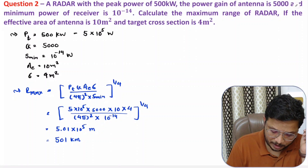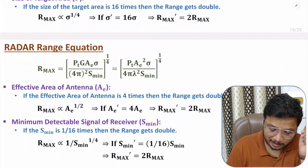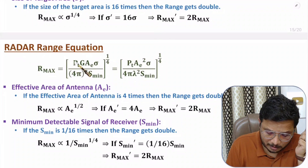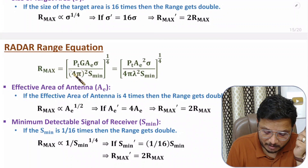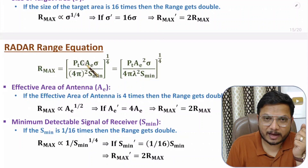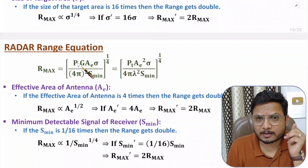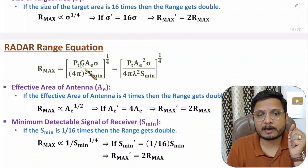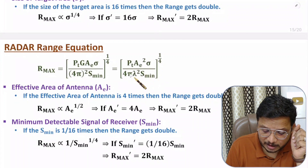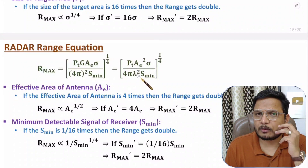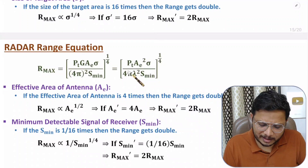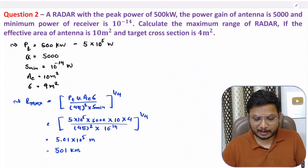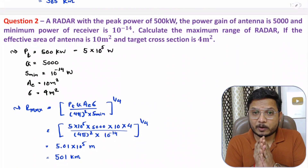If you carefully observe these two equations, you should know which one to use in which condition. Radar maximum range is P_T times G times A_E times sigma divided by 4 pi squared times S_min, raised to 1 by 4. Since we usually use a parabolic antenna with a radar system, gain equals 4 pi A_E by lambda squared. Substituting that into the first equation gives you the second form. You do not need to memorize multiple equations — with practice you will get to know which to apply. I hope you are getting these answers. If anything is unclear, please note it in the comment section — I will be happy to help. Thank you so much for watching this video.